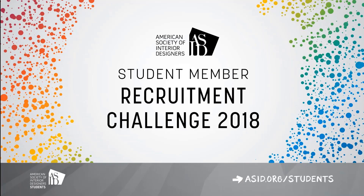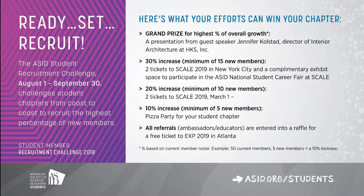New this year, student chapters have an exciting opportunity to grow their membership and get rewarded for it. New student chapter members will be tracked from August 1st through September 30th. Any name listed as a referral on a new student application will be entered into a raffle for a free ticket to the Leadership Experience, ASID's annual leadership conference of over 500 attendees. Student chapters that increase by 10% will get funding for a pizza party, and an increase of 20% wins two tickets to SCALE, the ASID student conference held in March. A 30% increase also gets two tickets to SCALE in New York City and a complimentary exhibit space to participate in the ASID National Student Career Fair.